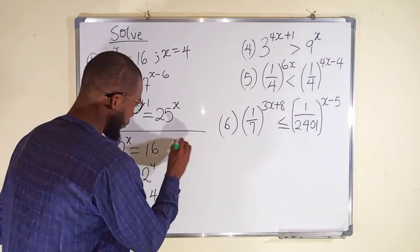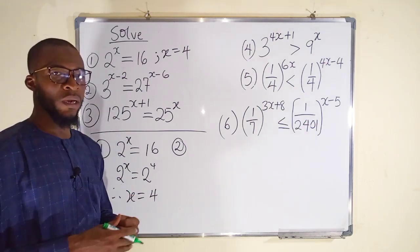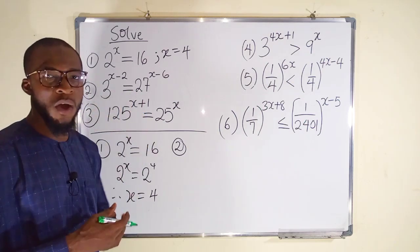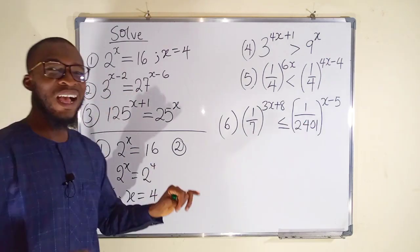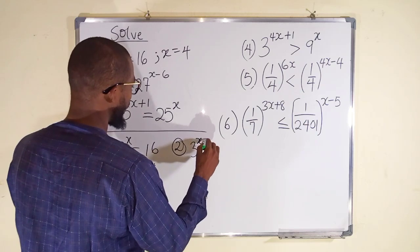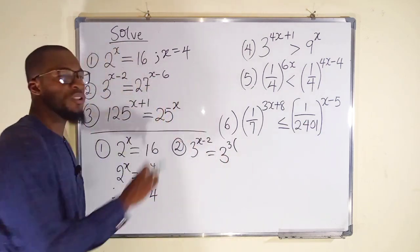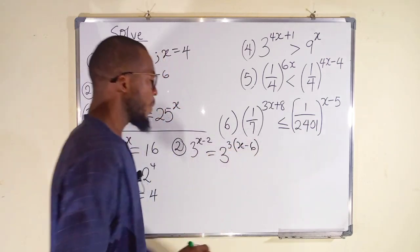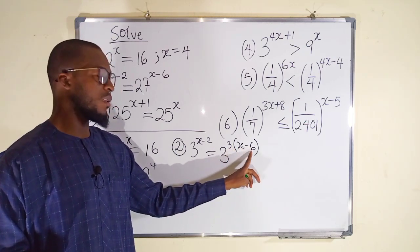Let's take the second one. We have 3 raised to the power of (x minus 2), and to the right we have 27 raised to the power of (x minus 6). We know that 3 raised to the power of 3 gives us 27, so we can write 27 as 3^3. To the left we still have 3^(x-2), and to the right we have 3^3 with another power (x minus 6). We distribute: 3 times x is 3x, and 3 times 6 is 18.